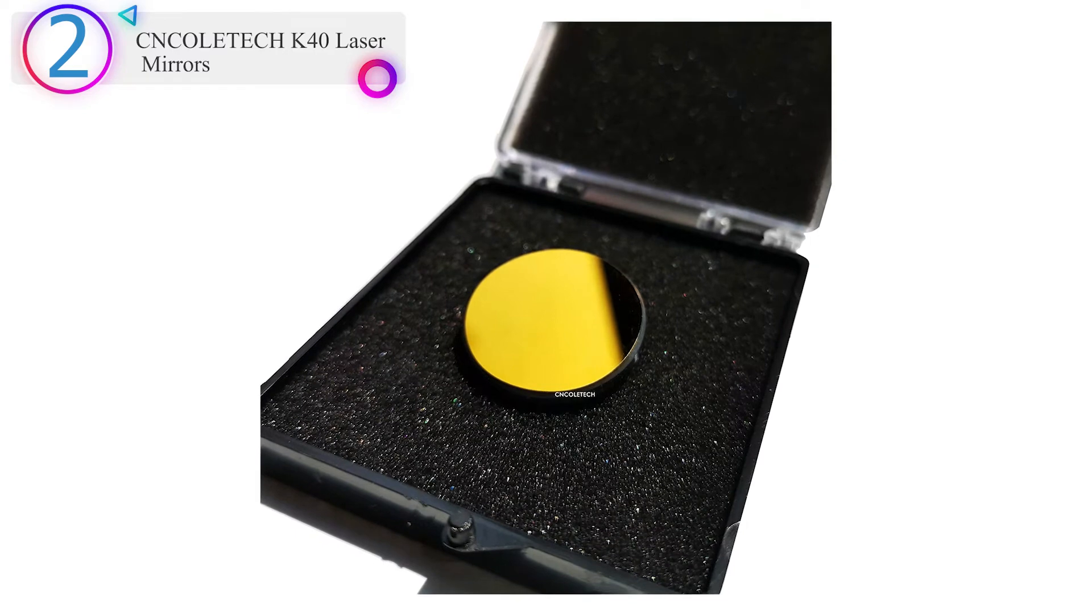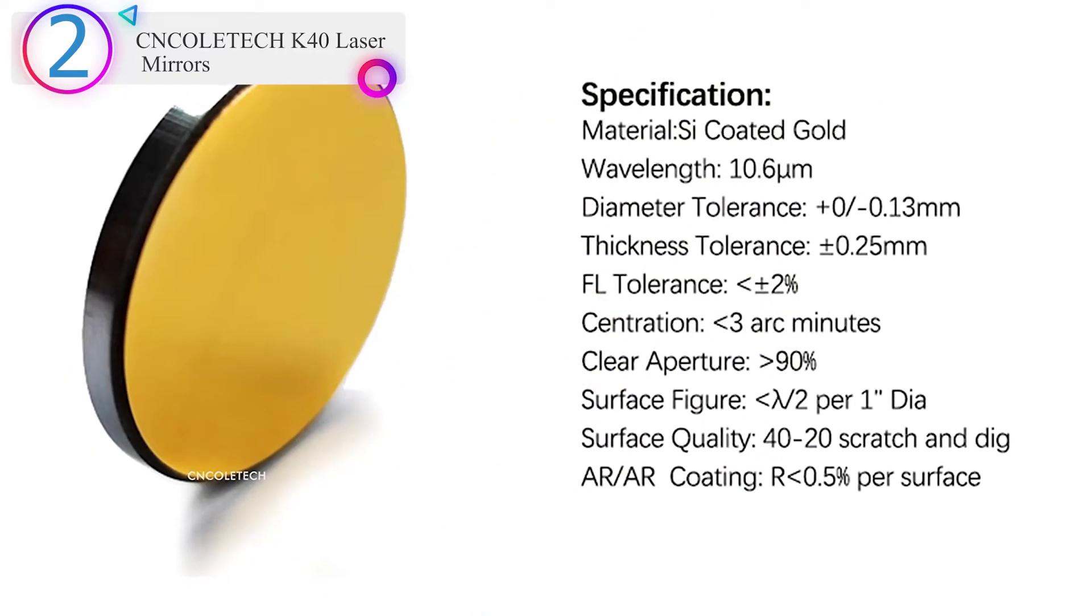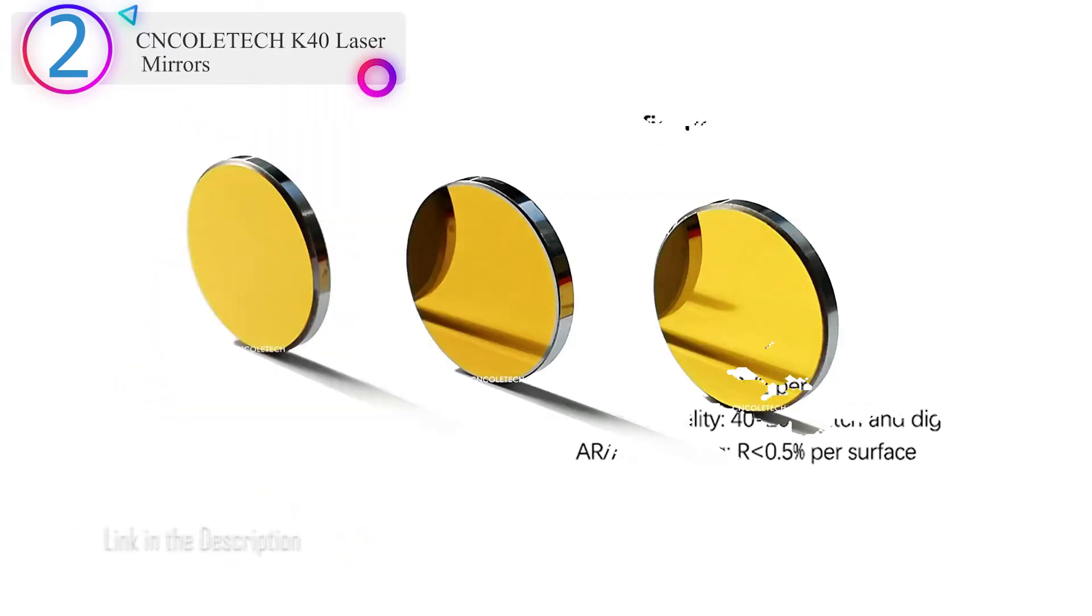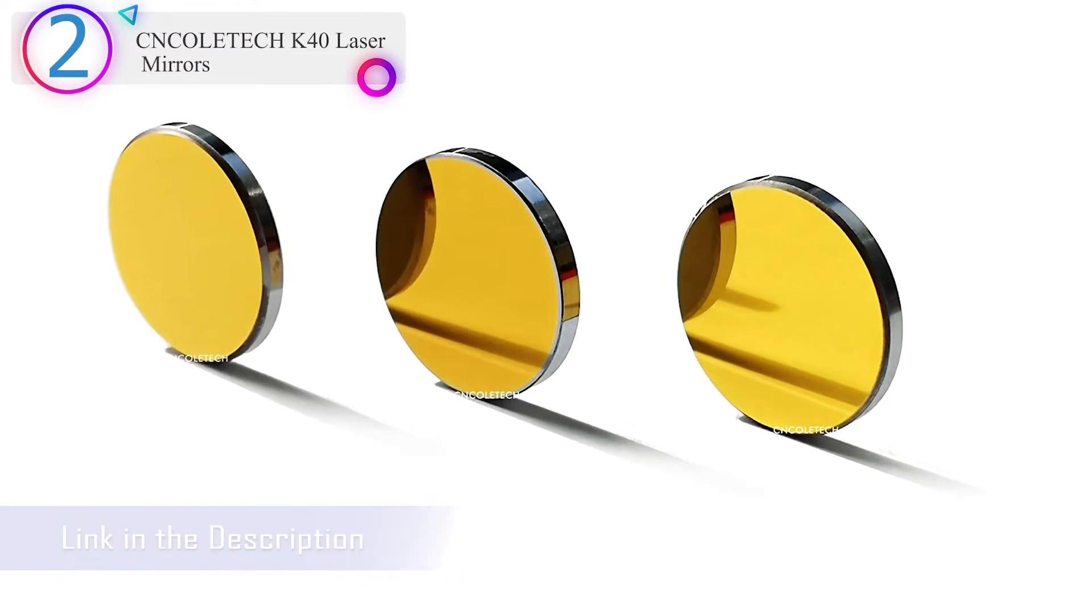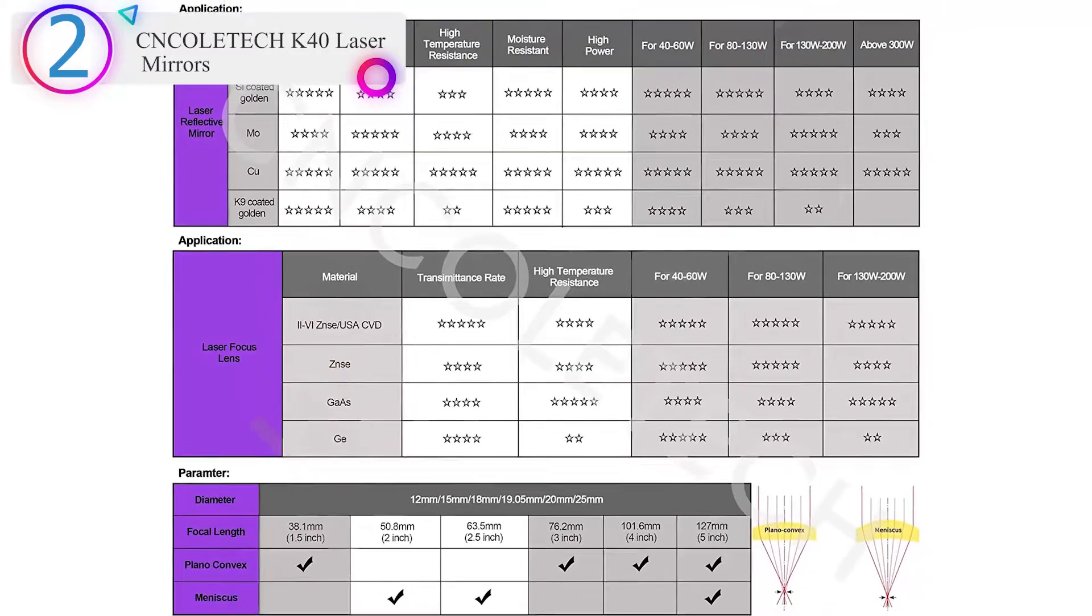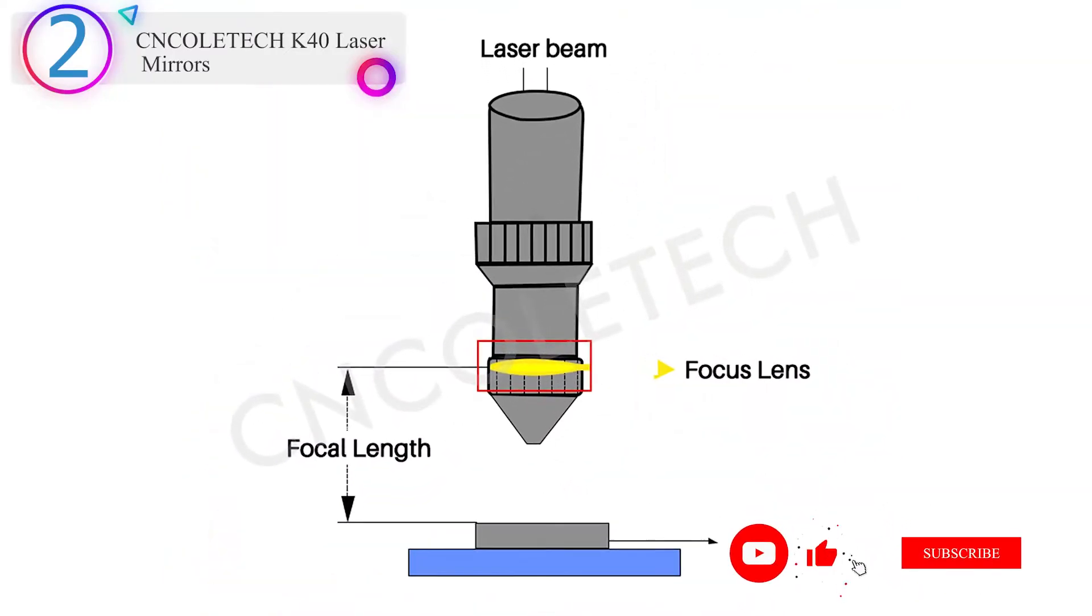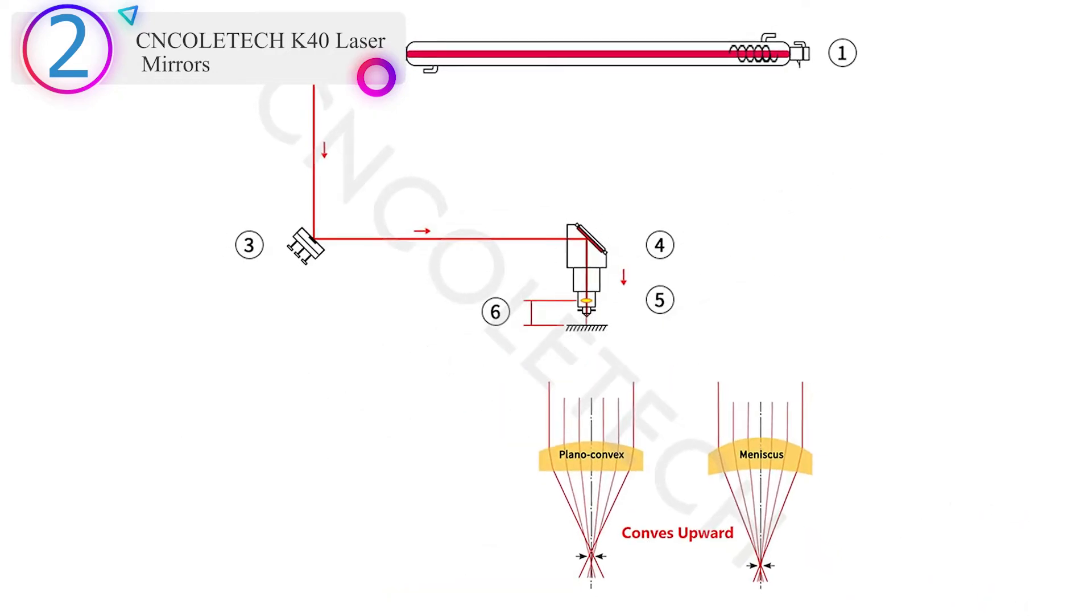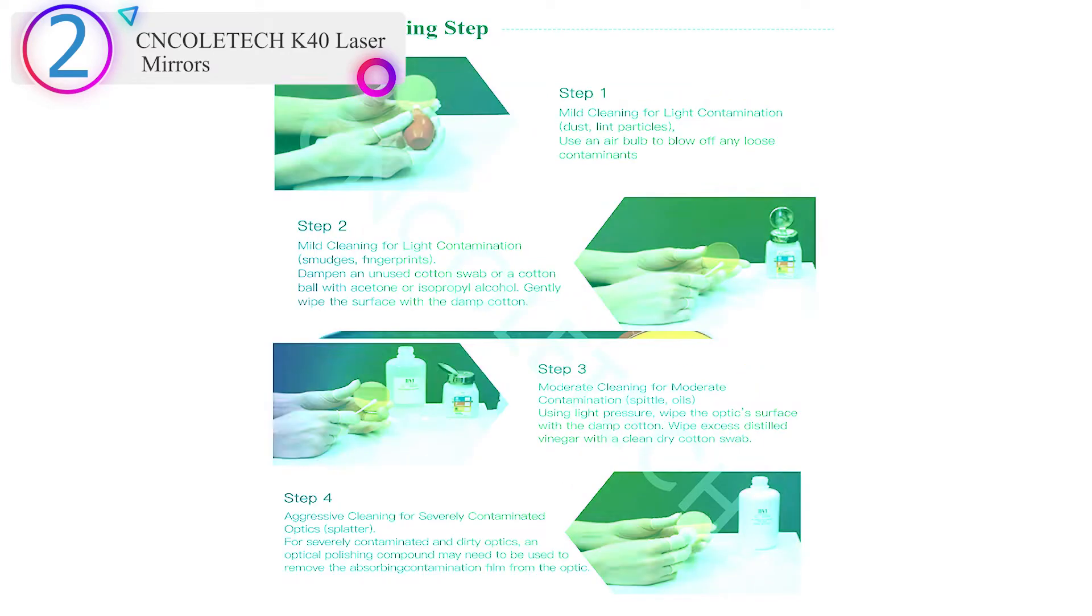High Reflective: 99.2%, less loss of energy, durable and long service life. Good replacement for the K9 Mirror for K40 or other 40W Engraver/Cutter. It can be used for CO2 laser low and high power engraving and cutting: 40W/50W/80W/100W/130W/150W.